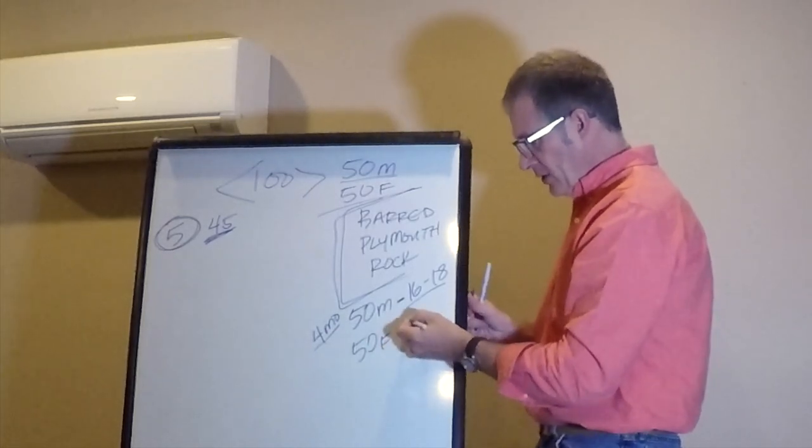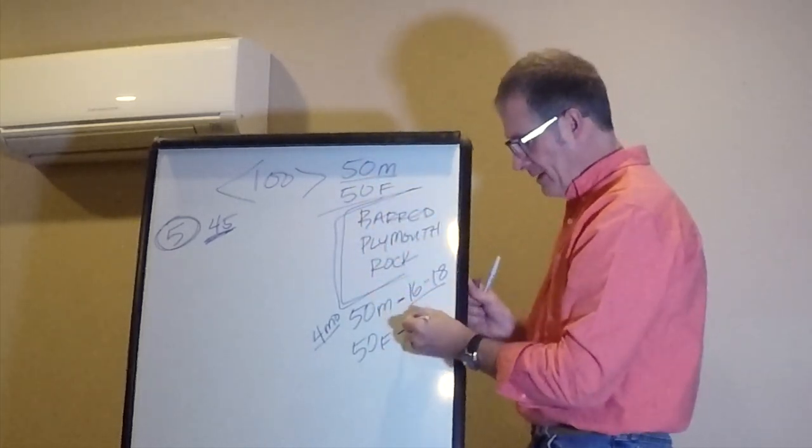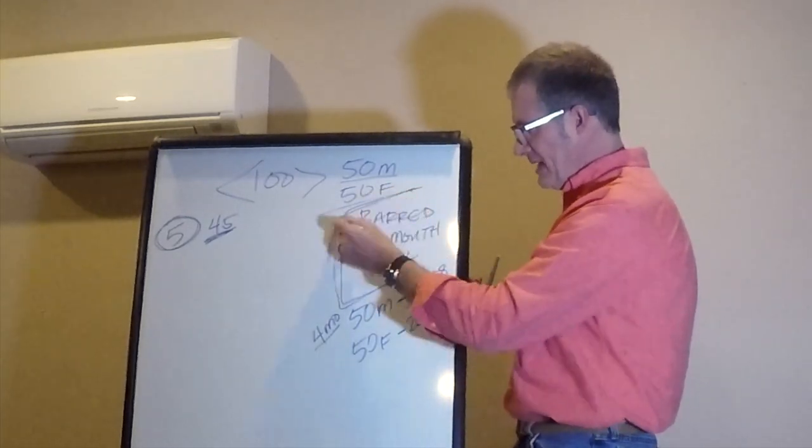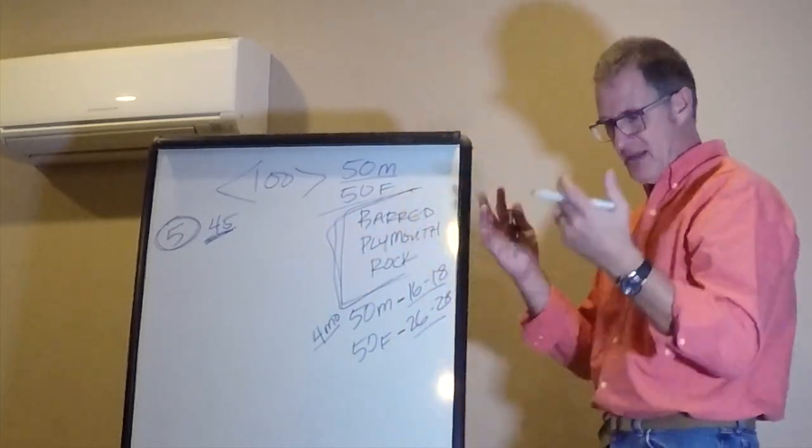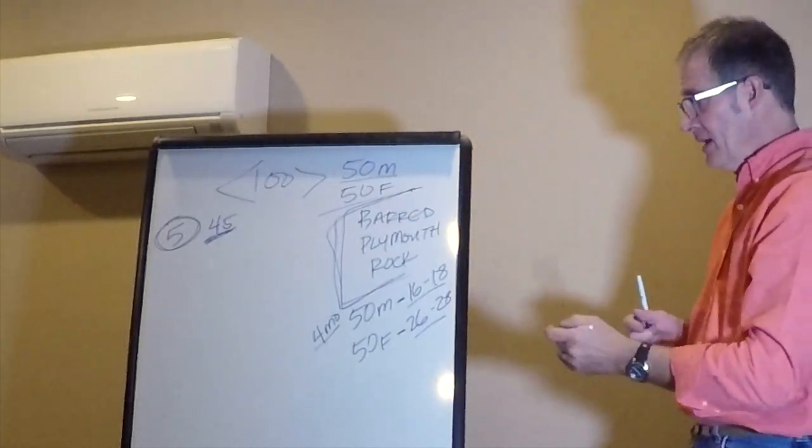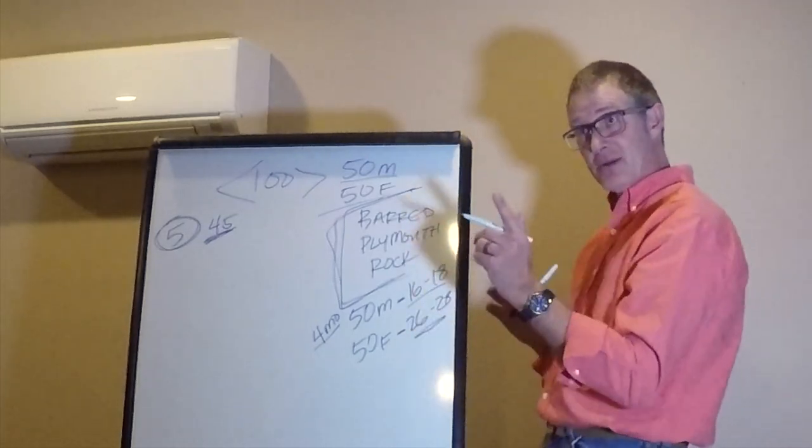The females, you're going to select them at about 26 to 28 weeks with this particular breed. So at somewhere around your five to six month mark, that's when you're going to select the females.